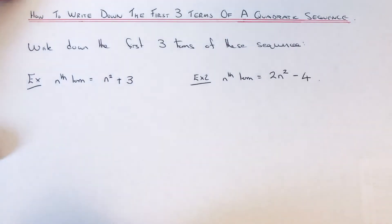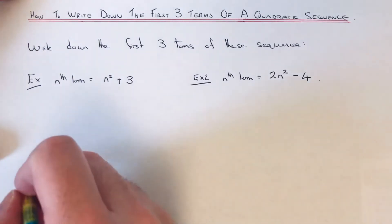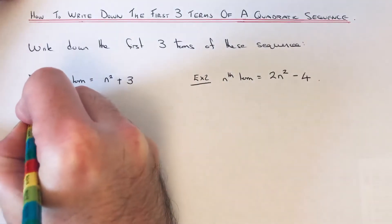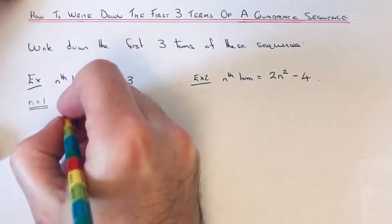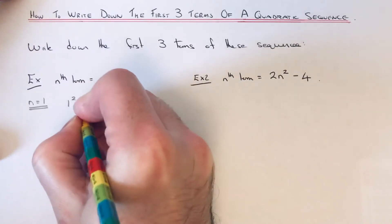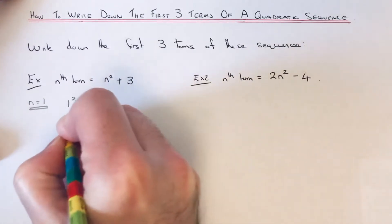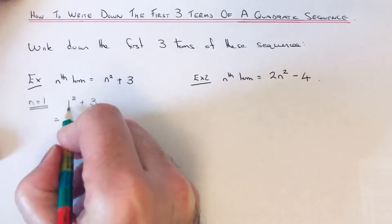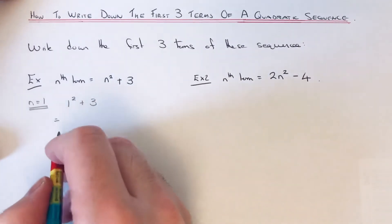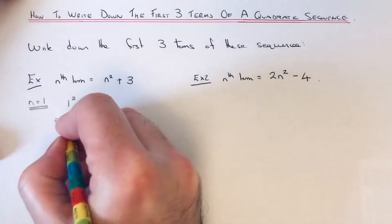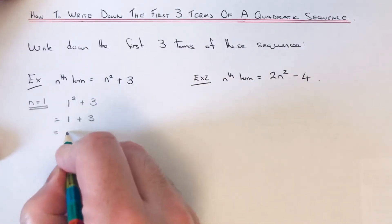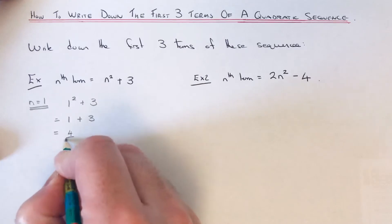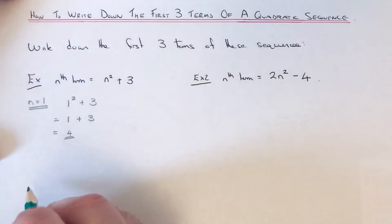So we need to write down the first three terms in the sequence n squared plus 3. To get our first term we need to substitute n equals 1 into this formula. So it will be 1 squared plus 3. You do the squaring bit first — 1 squared is 1 times 1, so that is 1 plus 3, which gives an answer of 4. So 4 is our first term.